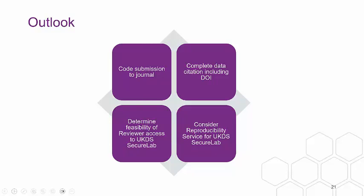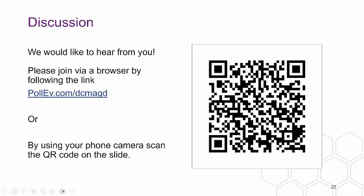The outlook for the UK Data Service SecureLab: at the moment what we do is encourage code submission to the journal, going together with a complete data citation including the DOI in the references section. But in future, we will determine the feasibility of reviewer access to the UKDS SecureLab — that was Scenario A — and we will also look into whether it would be possible to consider a reproducibility service for the UKDS SecureLab in the long run. And now we would like to come back to an interactive part and hear from you again, as we close the circle from our opening icebreaker.